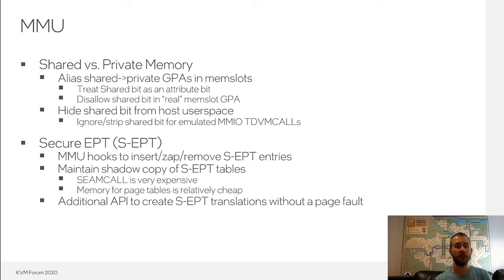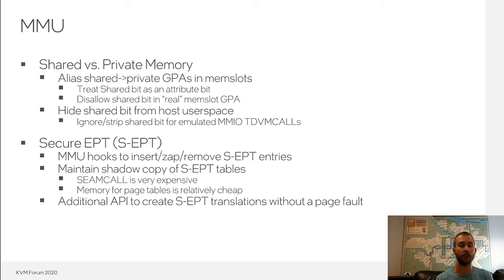Secure EPT also needs an additional API from the MMU to allow adding translations without a page fault. This is necessary because the only way to load non-zero memory into a guest private memory space — i.e., load the initial memory image — can only be done before vCPUs are runnable. And to load non-zero memory, the secure EPT translations for the associated guest private memory must be in place. In short, we have to have the secure EPT translations before we can run vCPUs, which conflicts with KVM's existing model of populating EPT tables on demand in response to page faults from the guest.